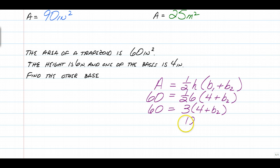So 60 is equal to half of 6 is 3 times 4 plus b2. Distribute your 3, and you end up with 12 plus 3b2. Subtract 12 from both sides, and you get 48 is equal to 3 times your other base. Divide both sides by 3, and b2 is equal to 16 inches.